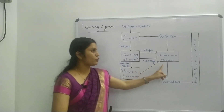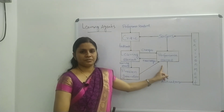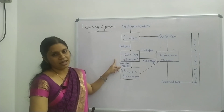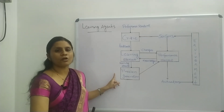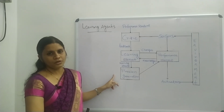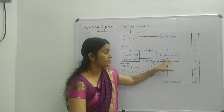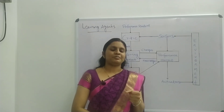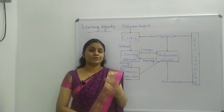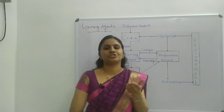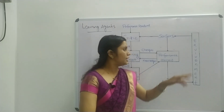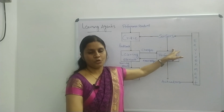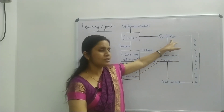In this diagram you can see there are mainly four components of a learning agent. First is the performance element, second is the critic, third is the learning element, and fourth is the problem generator. The performance element is responsible for selecting external actions from the environment through sensors.